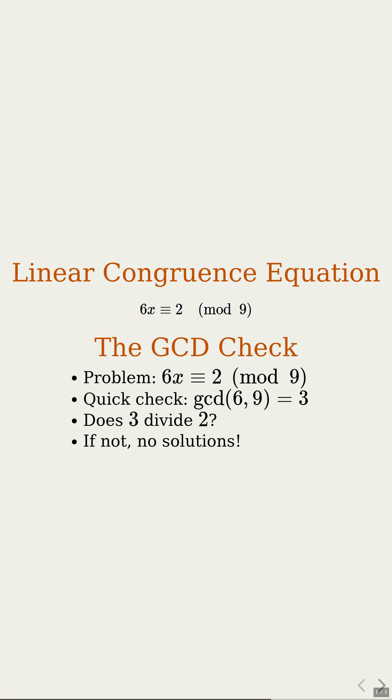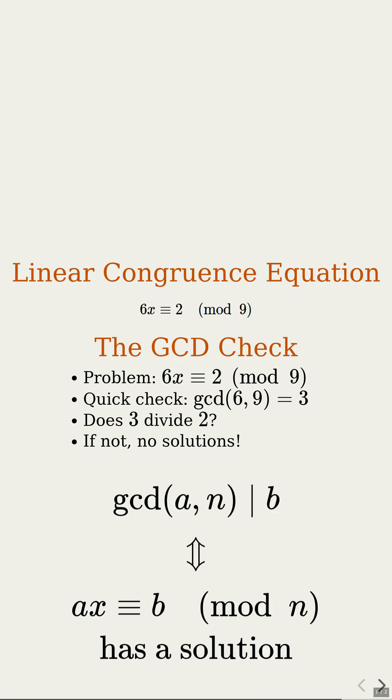Wait, that's seriously all? General rule. A linear congruence has a solution exactly when the greatest common divisor of a and n divides b. Time-saving trick unlocked.